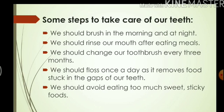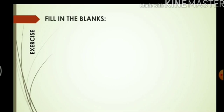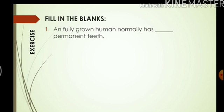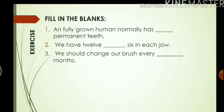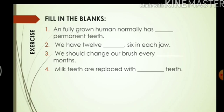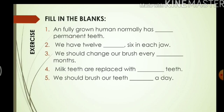With this we come to the end of this chapter. Here are some exercise questions. Fill in the blanks: A fully grown human normally has 32 permanent teeth. We have 12 molars — six in each jaw. We should change our toothbrush every three months. Milk teeth are replaced with permanent teeth. We should brush our teeth twice a day.